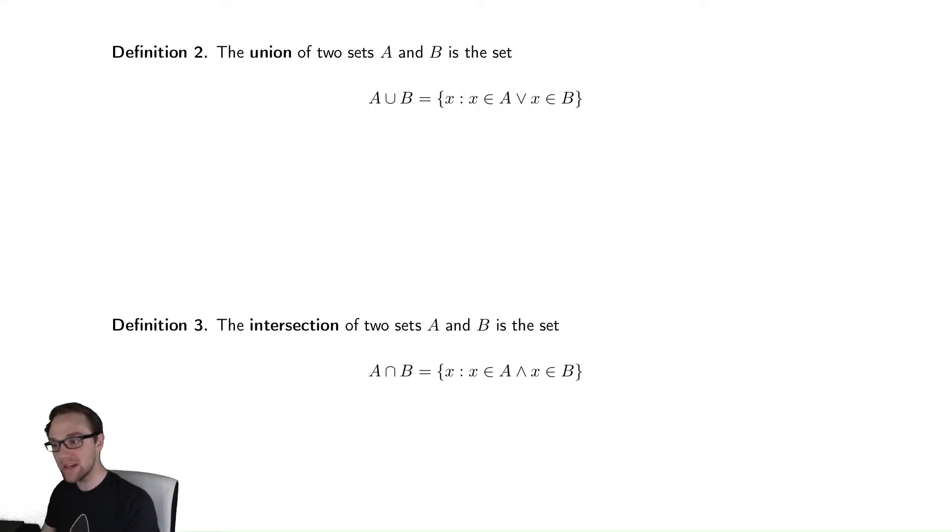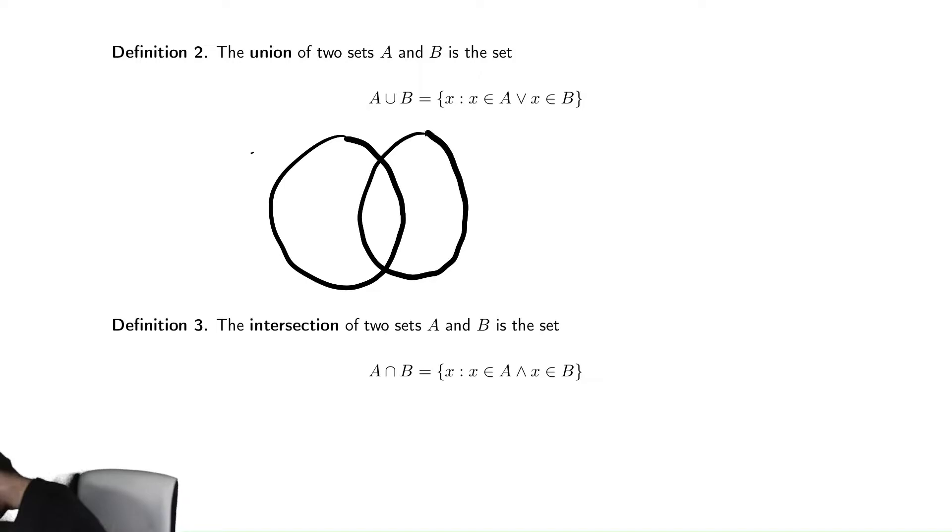A common way to visualize this is with a Venn diagram, where we imagine that one of the sets, let's say A, is a circle, and B is a different circle. And if we want to visualize what is the union, well, the union will be everything that is in both of those sets.